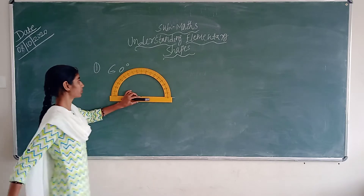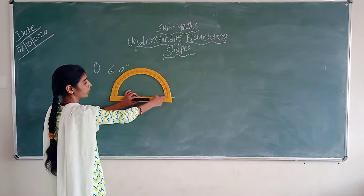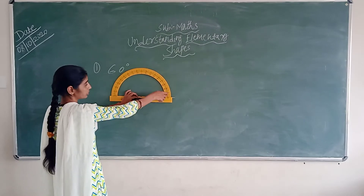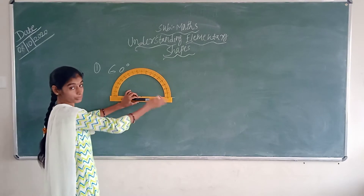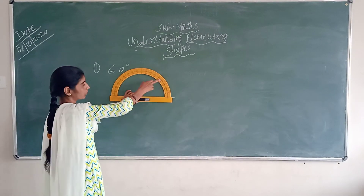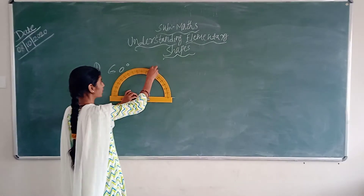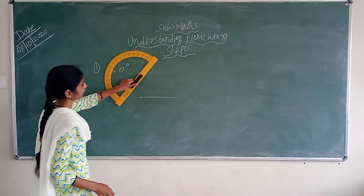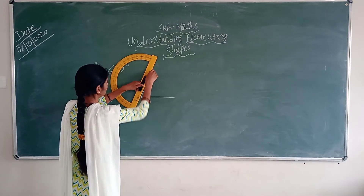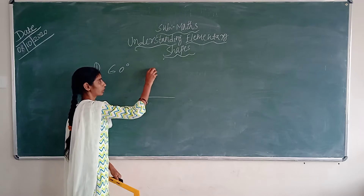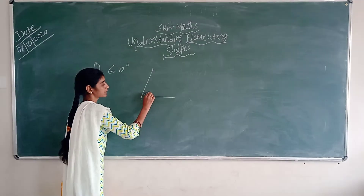Now you have to measure with 60 degrees. To measure 60 degrees, you have to see the downside numbers — don't read the upside numbers. As you all know, if you have to measure, always close this side. Here you can see it is 60 degrees. Now you can mark it here, then you can draw a line like this. You have to draw a line like this. So now it becomes an angle of 60 degrees.